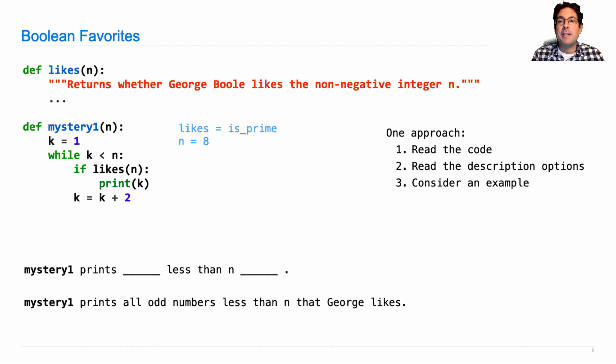So what would that mean? Well that would mean picking some behavior for likes, like let's pretend that George Boole likes prime numbers, and picking some value for n like eight, and then tracing through and figuring out what will happen. So if we call mystery one on eight, then n will be bound to eight, k will be bound to one. One is less than eight.